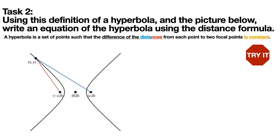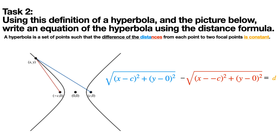So here's task two. Using this definition of a hyperbola and the picture below, write an equation of a hyperbola using the distance formula. That definition is: a hyperbola is a set of points such that the difference of the distance from each point to two focal points is constant. So all we really need to do is use the distance formula. The blue distance is the distance from point (x, y) to (c, 0) and the red part is the distance from (x, y) to (-c, 0), and the difference of those distances is constant, or d.